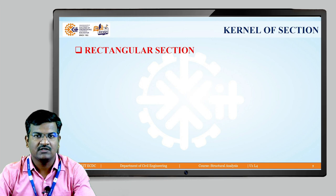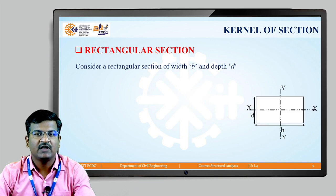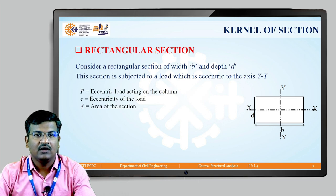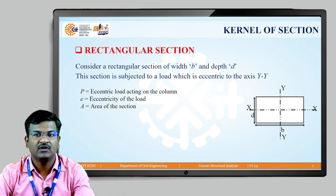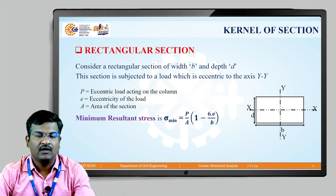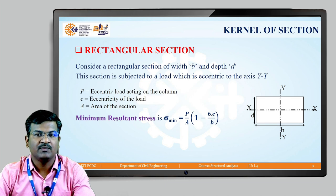First, consider a rectangular section of width b and depth d. Here, XX and YY are the centroidal axes of the rectangular section. The section is subjected to a load which is eccentric to the YY axis. P is the eccentric load acting on the column, small e is the eccentricity of the load, and capital A is the area of the rectangular cross section. Since these are symmetrical sections, we know how to calculate the resultant stress on a rectangular section eccentrically loaded in one axis.